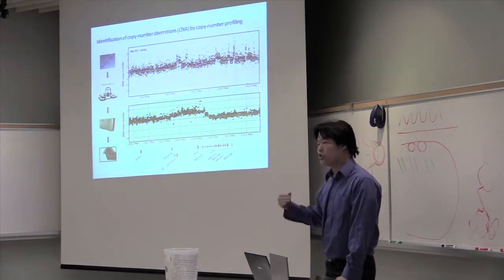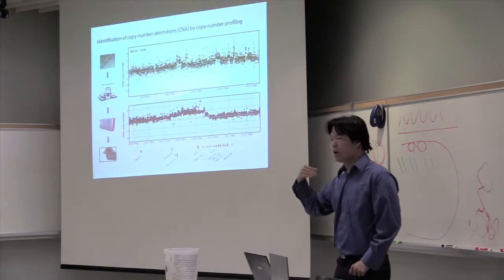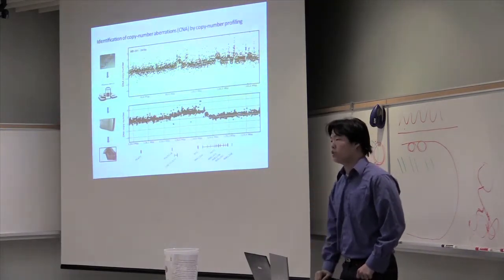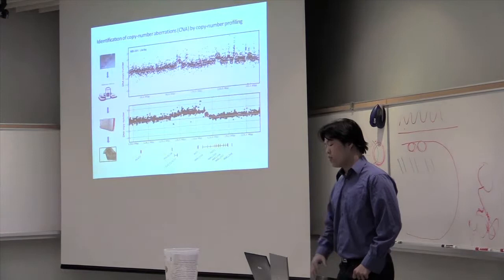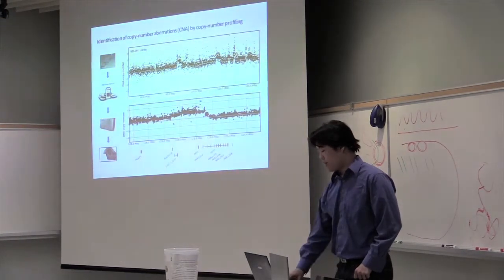You can see this first gray line indicates a balanced genome, where there's no copy number change, and there are regions in the genome that are gained, so these are shown in red, regions of the genome that are blue are losses, where the tumor has lost copies of that genome.